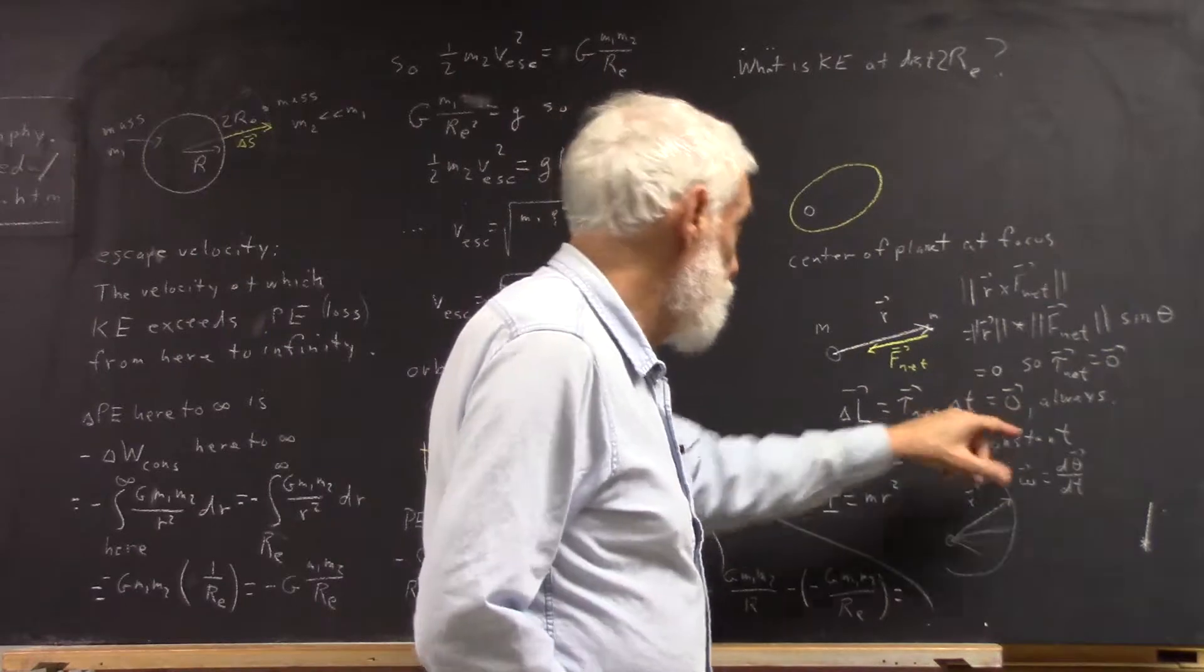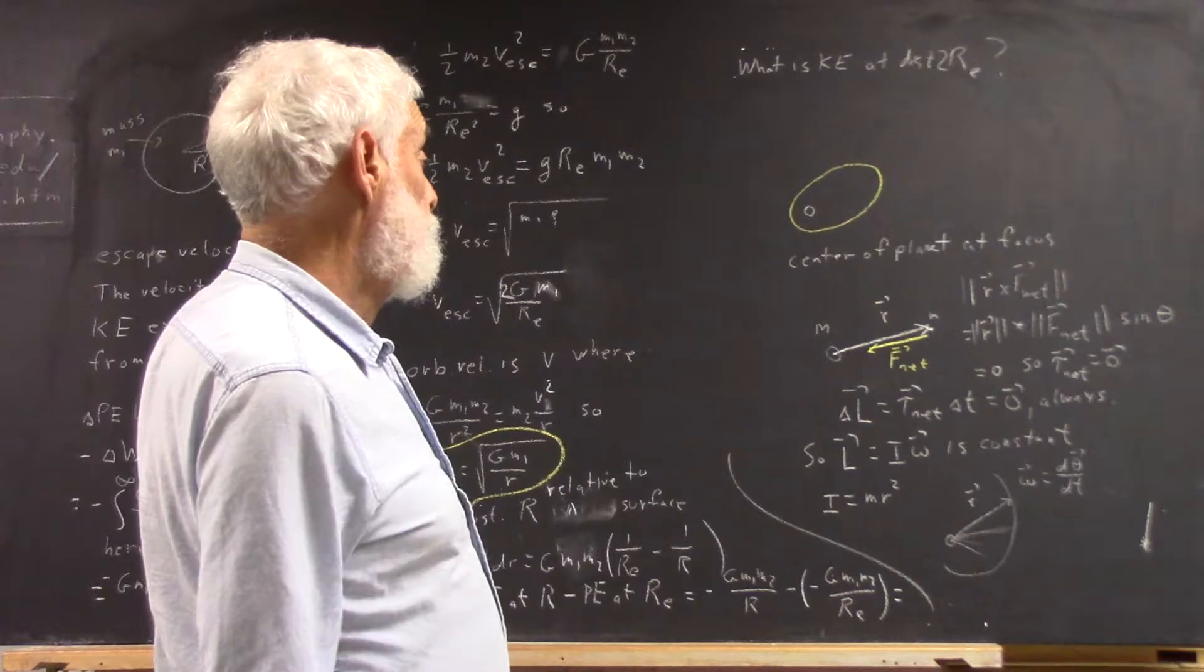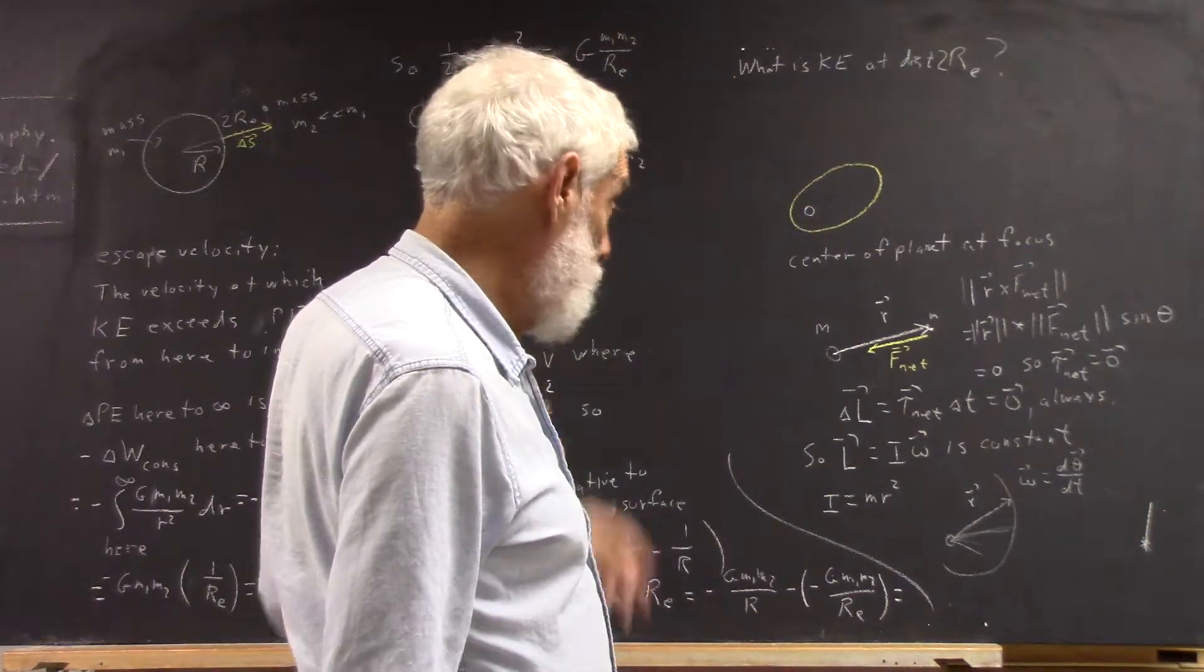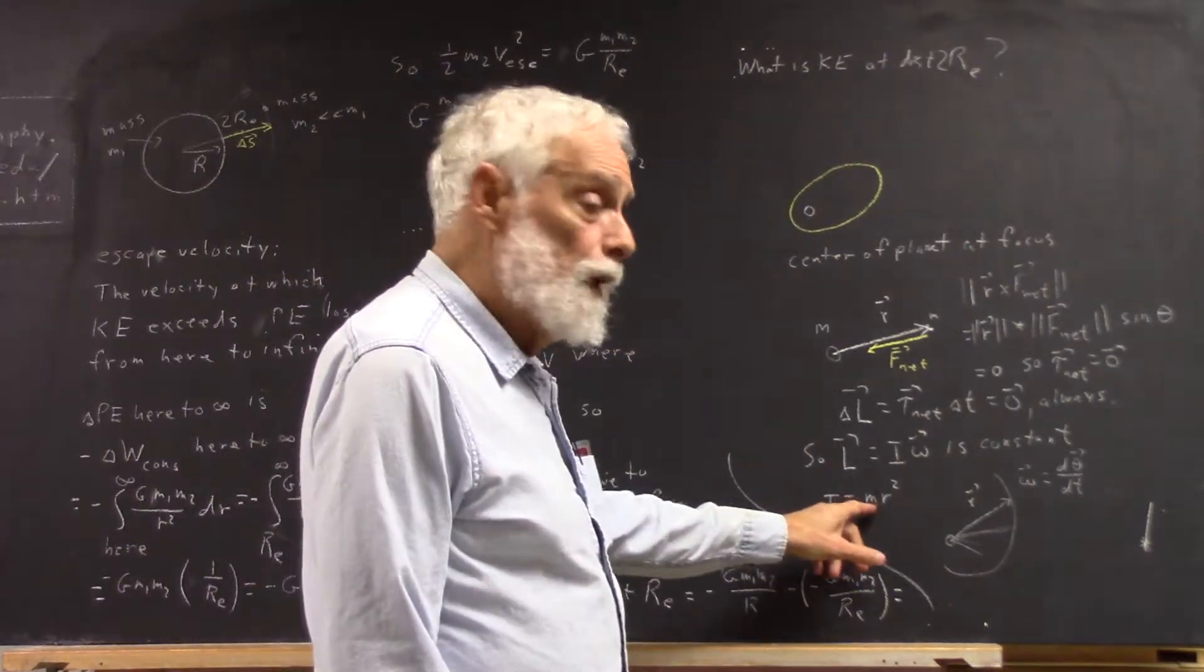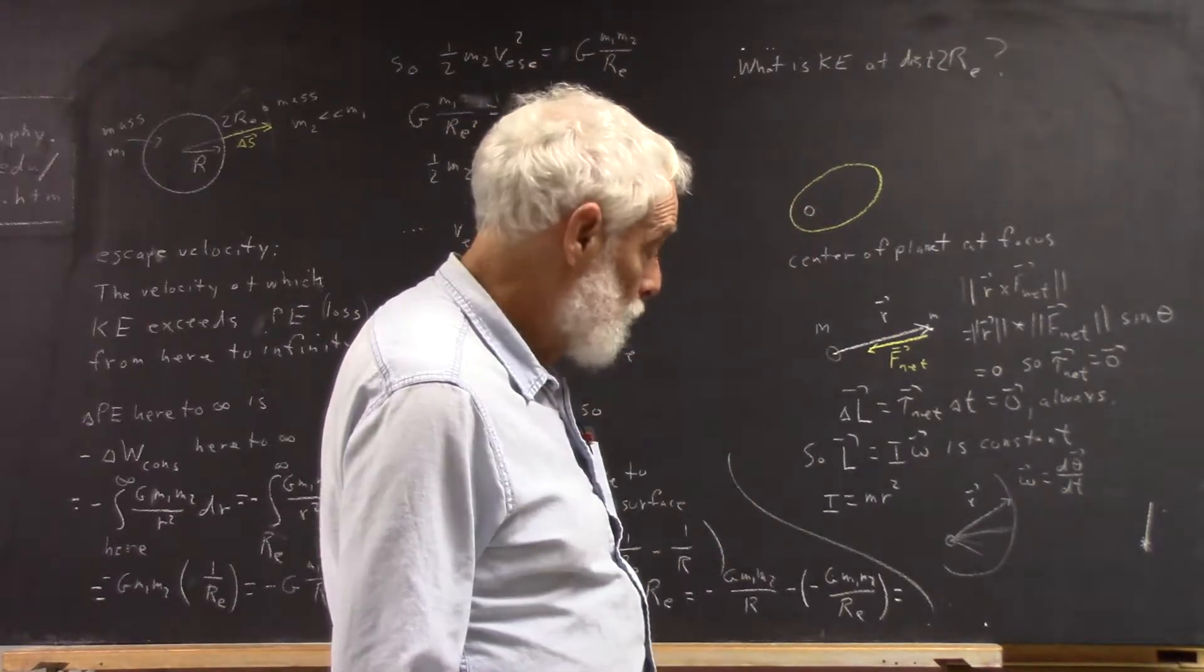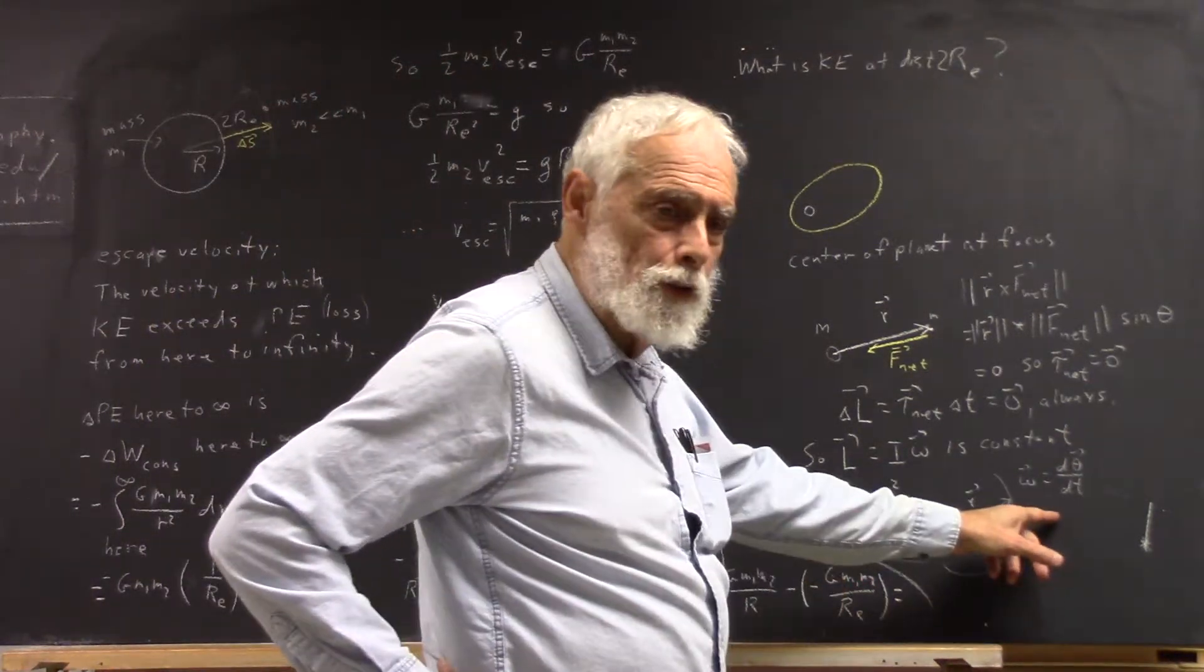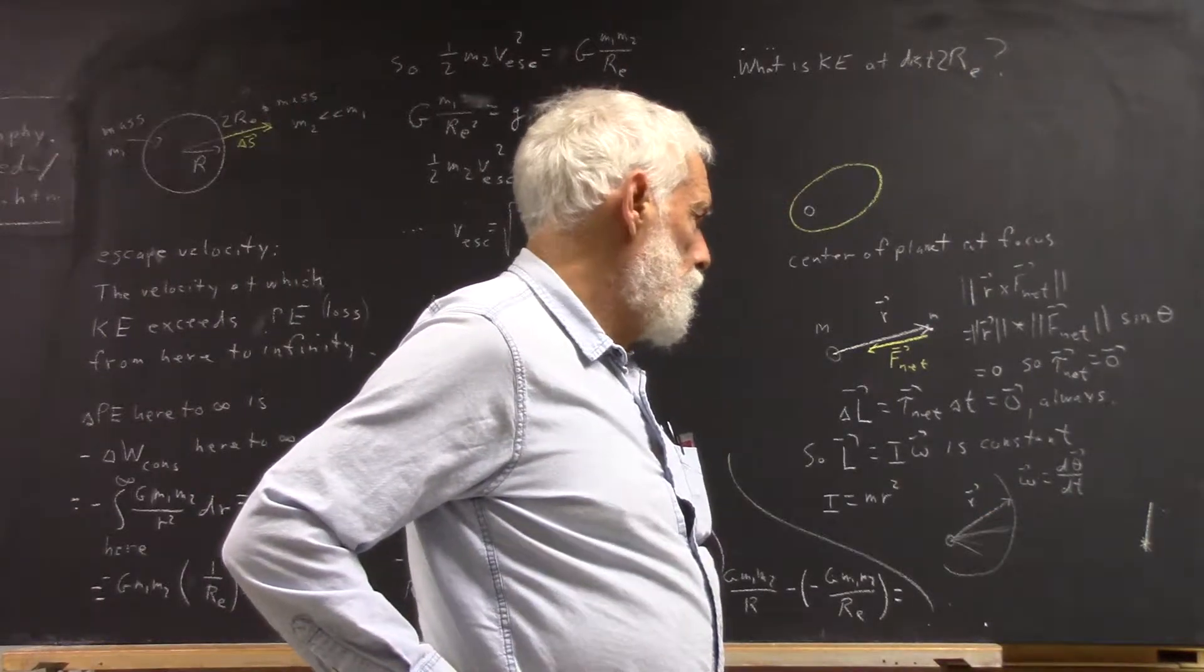For any time interval, the angular momentum of this orbit is always the same. So L equals I omega is constant. Since I equals MR squared, your axis of rotation is center of the Earth, perpendicular to the plane of the orbit. You draw all the conclusions that lead to Kepler's laws. I'm not going to go through the details of those. I'll let you look them up.